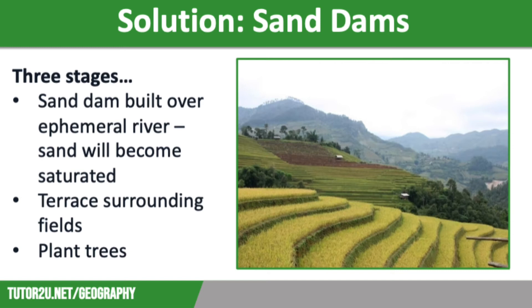Thirdly, local communities will plant trees so that tree roots can hold the soil together and keep water in the ecosystem. They will usually choose fruit trees which can provide food, or trees that have bark useful for medicines.